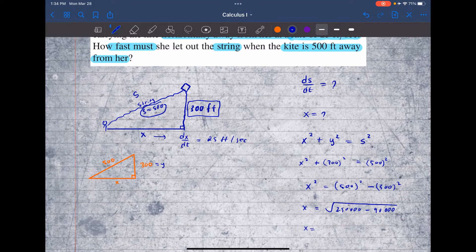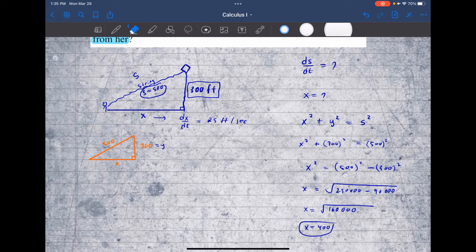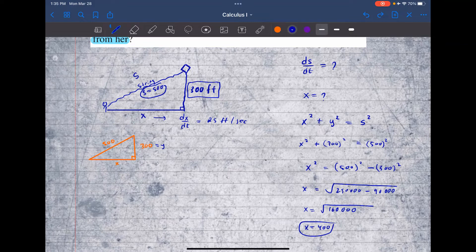So x is equal to the square root of 160,000. So x is equal to 400. So that's what x is. So I'm going to go ahead and fill this in right here in the blue triangle. So this distance is 400.